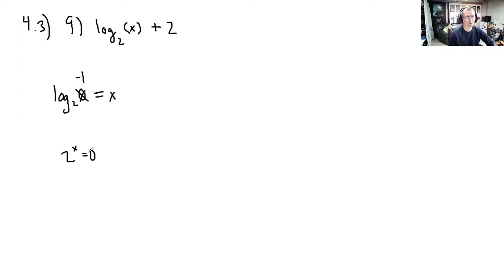We'd be asking, when we tried to evaluate this, what number, when I take 2 to that number, gives us a negative number like negative 1. There is no such number. 2 to any power is positive. It's always a positive number. So in logarithms, when you're making your table, you're only plugging in positive numbers. No negatives.